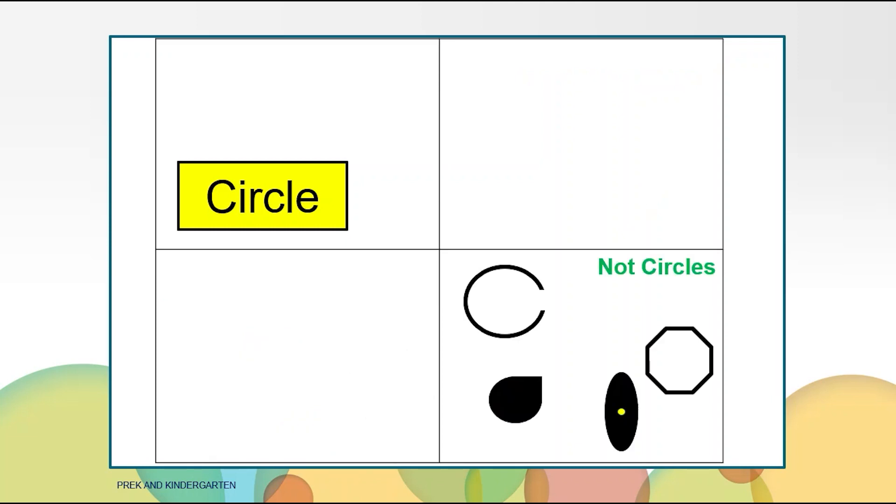These shapes are not circles. The top shape isn't a closed shape. It has a hole in the curved line. The shape under that has a corner or angle. The next shape looks kind of like a circle but it's called an oval. The difference is the circle is the same length from the middle of the circle to all the edges of the curved line.